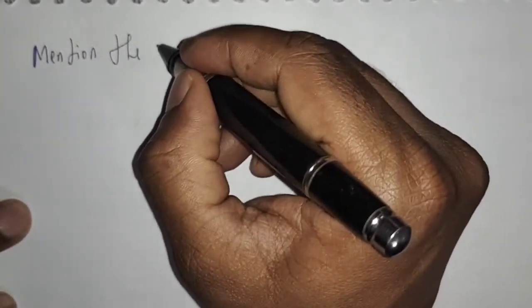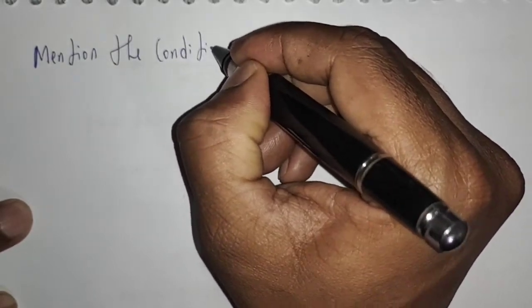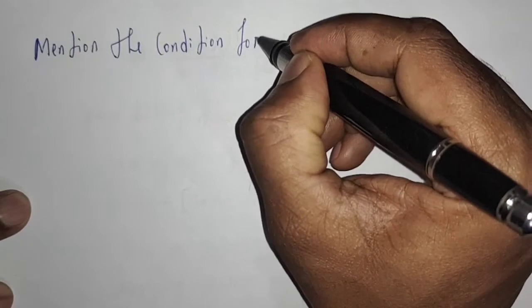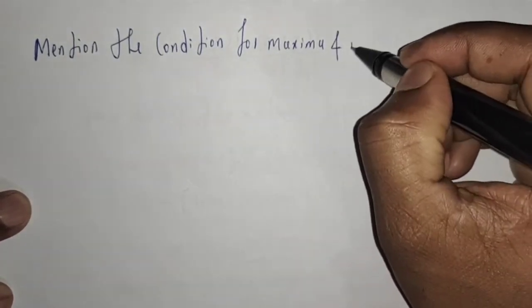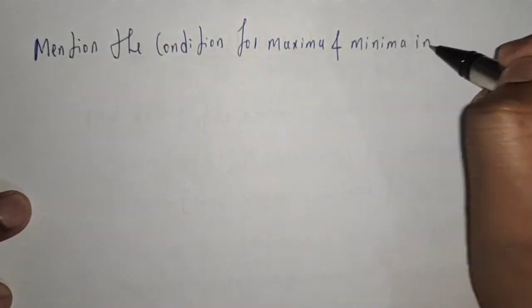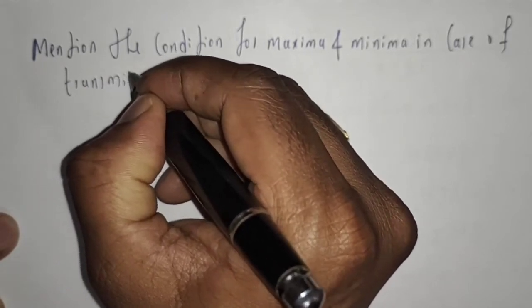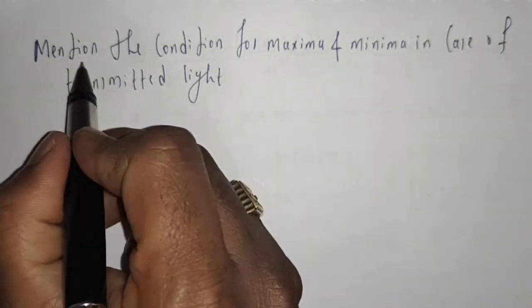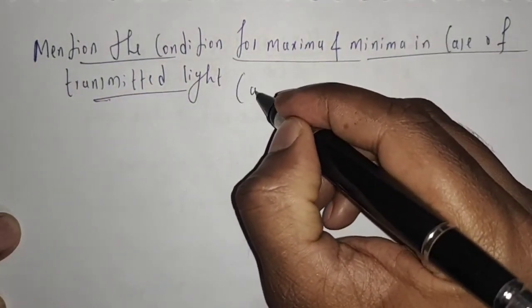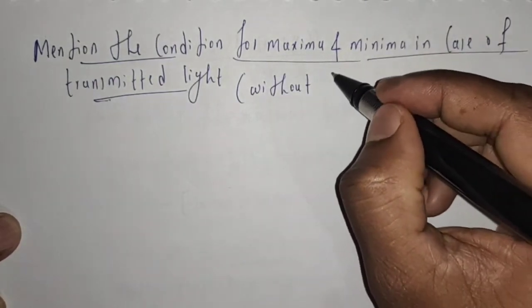In the last video, we derived conditions for maxima and minima in the case of reflected light in a thin film. In this video, I am going to mention the condition for maxima and minima in the case of transmitted light. It is without derivation.